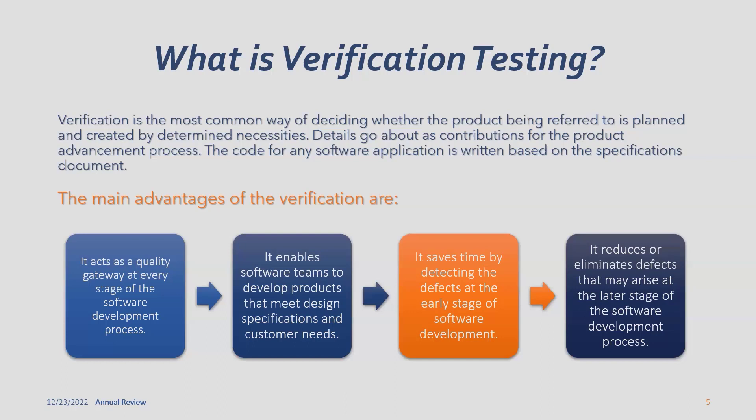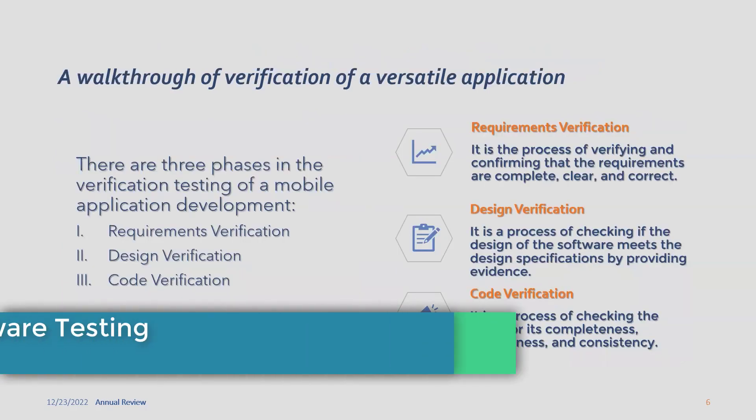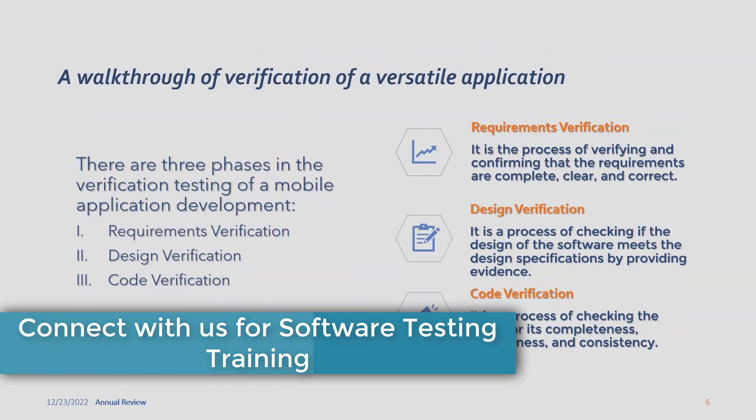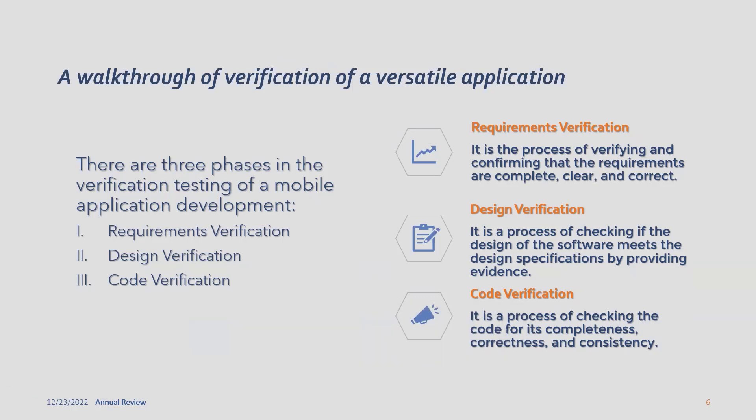Verification reduces or eliminates defects that may arise at the latter stage of software development. A walkthrough of verification generally involves three different phases. First is requirement verification, where the testing team verifies the complete requirements. Second is design verification, where they verify each and every piece of design built into the application. Third is code verification, where the test team verifies the complete code — how it is working, where it lies, and whether any reproducible defects have arisen.